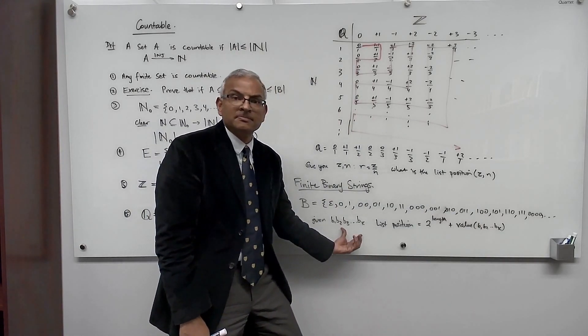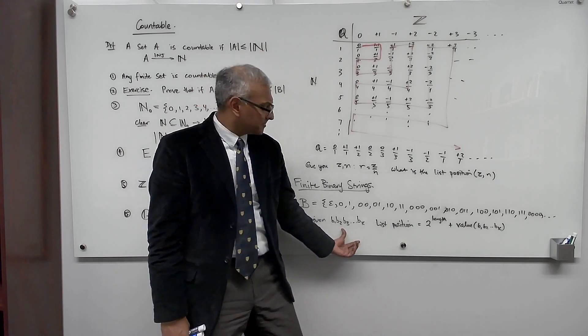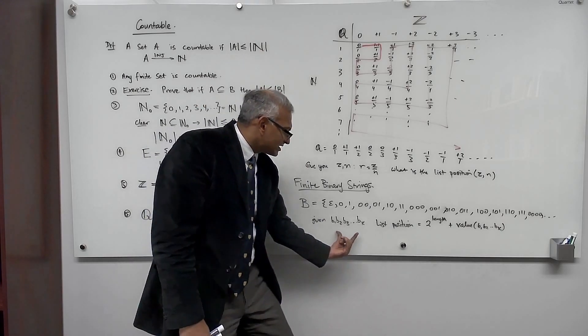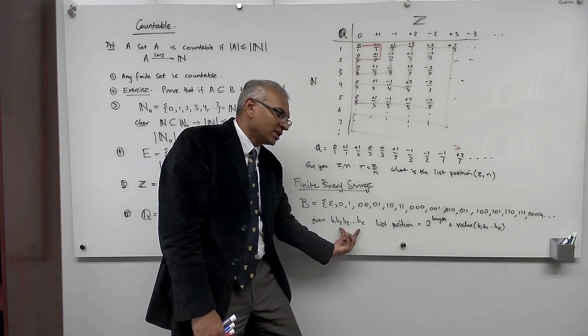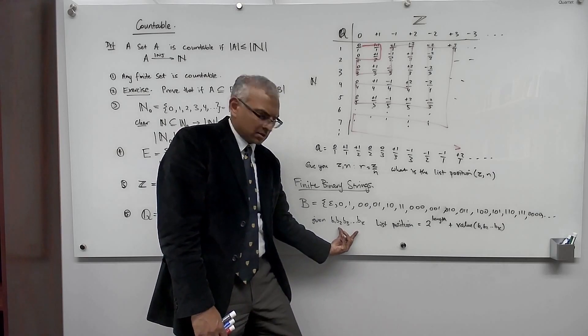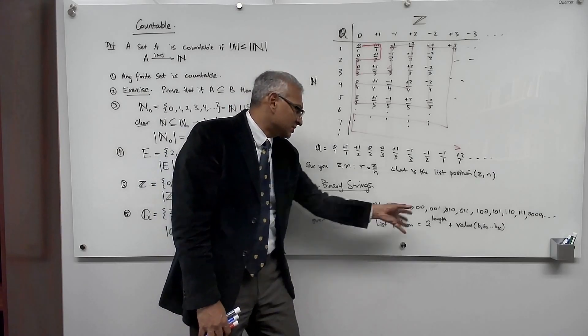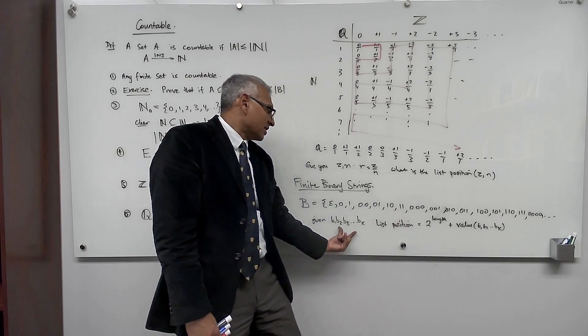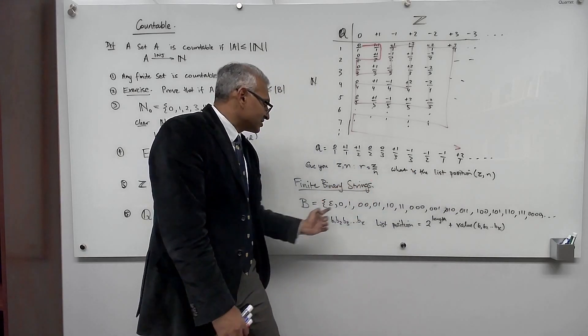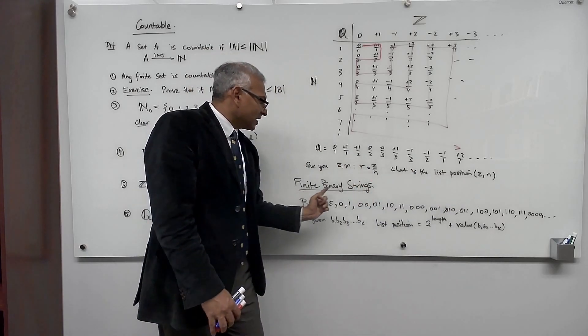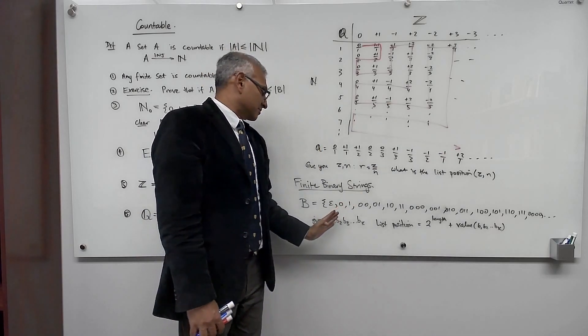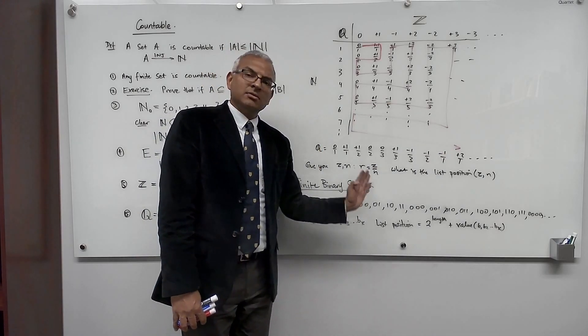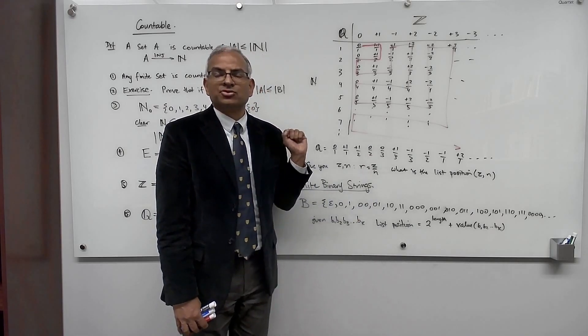So prove it. And it's proved in the text. But it's a good exercise for you. But once I give you an unambiguous way to compute the list position of any string, then that and the disposition of two different strings are different, then that means that I have a valid list. So I've listed the finite binary strings and so the finite binary strings are countable. They have a cardinality which is at most the cardinality of the natural numbers.